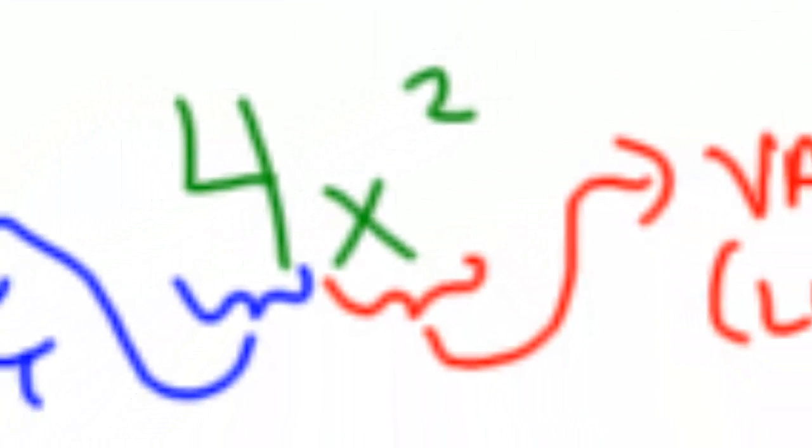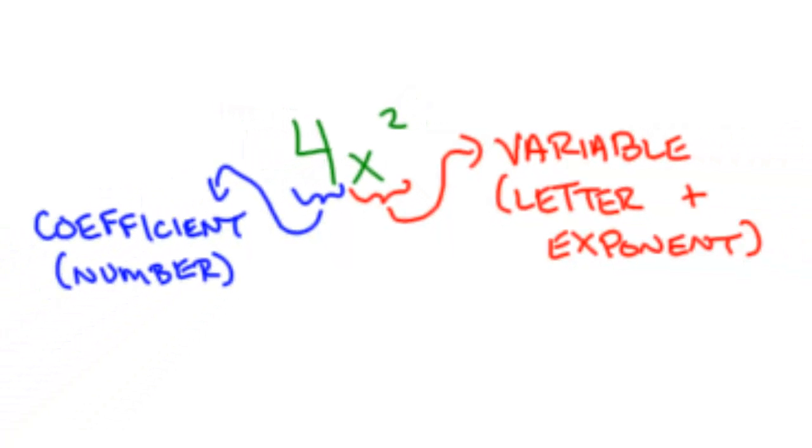So, to summarize, today we looked at terms such as 4x². And we said that terms have two parts. The variable part, which is made up of the letter and the exponent. And the coefficient, which is the number part of the term.